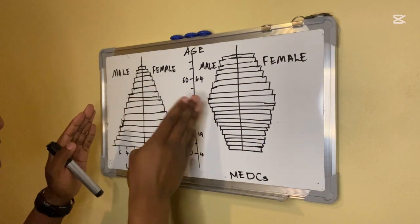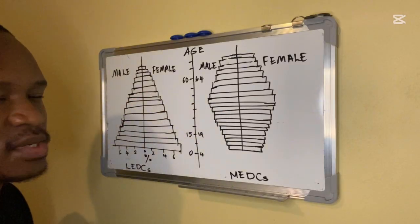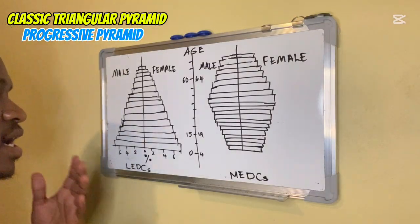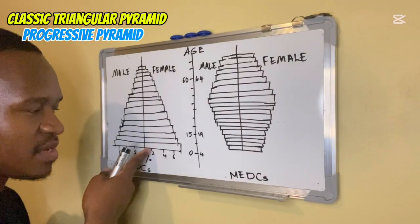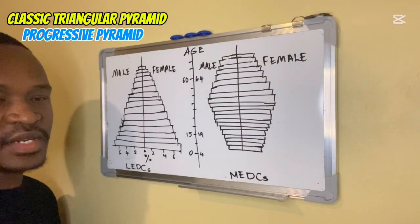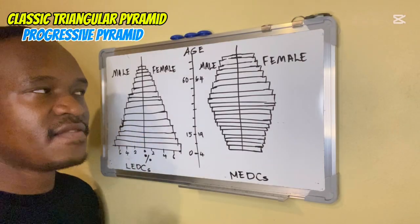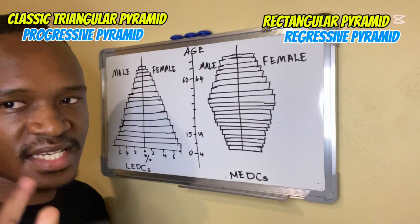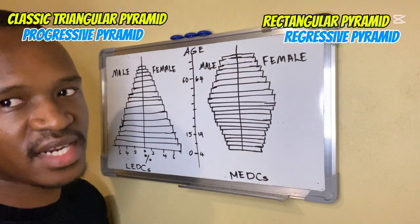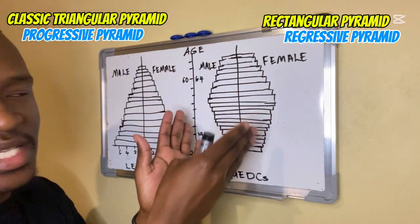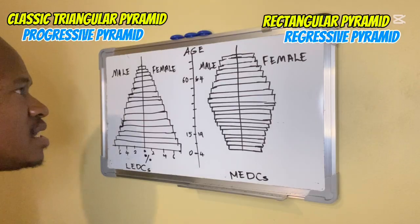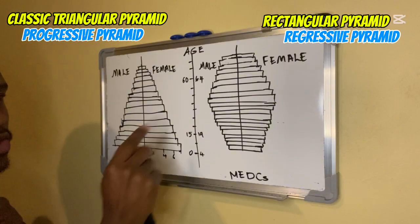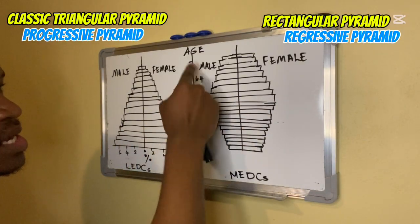There are two types of population pyramids. The first one is known as a classic triangular pyramid, or a progressive pyramid. On the other side we have a rectangular pyramid, also called a regressive pyramid — some textbooks even call it a bell-shaped pyramid. Both pyramids show us gender: male on one side, female on the other.